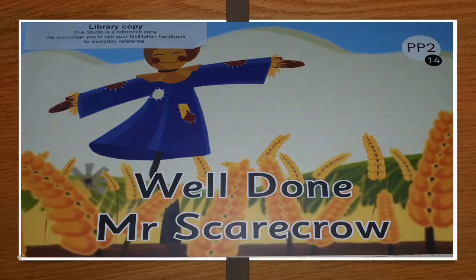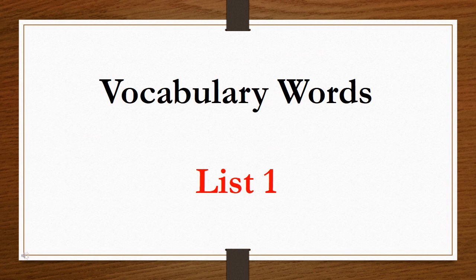Hello children, today in English we are going to see a few vocabulary words. We will see the meaning of those vocabulary words and we will also use the words in sentences. We have already read the story 'Well Done Mr. Scarecrow,' so now let's see vocabulary words list one from that story. When we read vocabulary words, we don't have to decode them, so we are going to read them as a whole word.